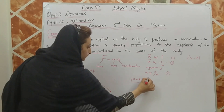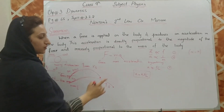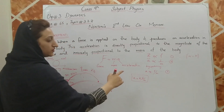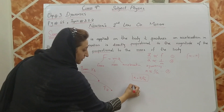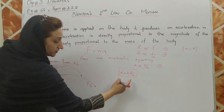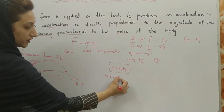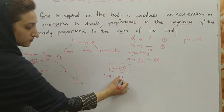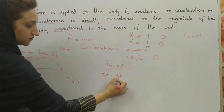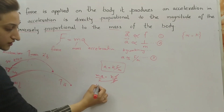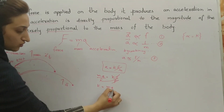To find the value of k, I rearrange the equation. Multiplying both sides by m, and then dividing both sides by f, we get the equation k is equal to m times a divided by f.